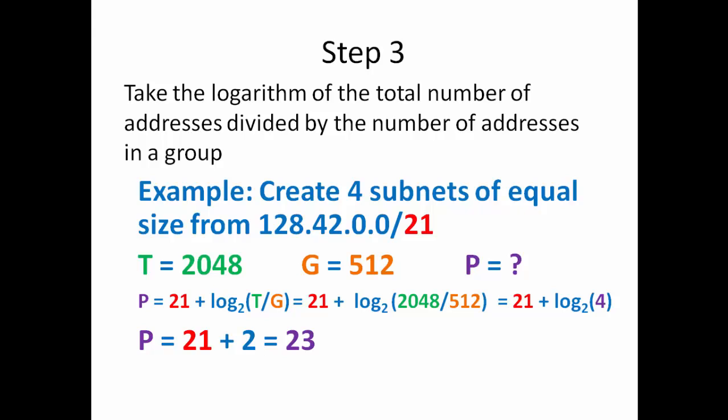I raise 2 to the power of 2 to get 4. Plug that in and I say 21 plus 2 is 23. The starting address is now 128.42.0.0 slash 23. And that is the first starting address of our 4 subnets that we have now created.